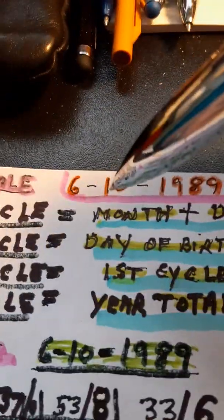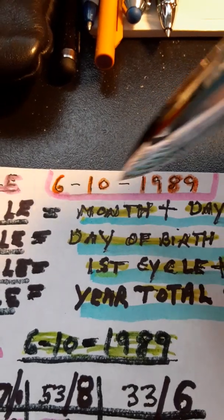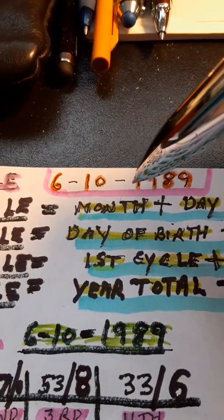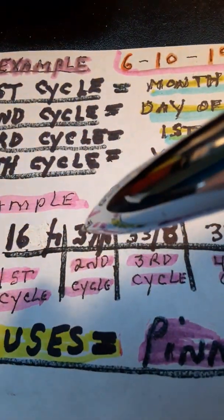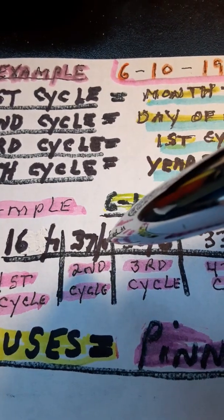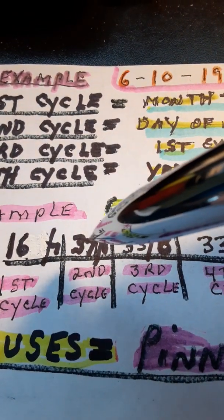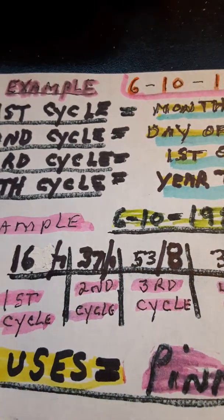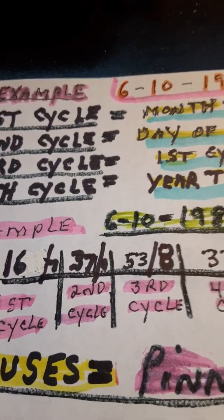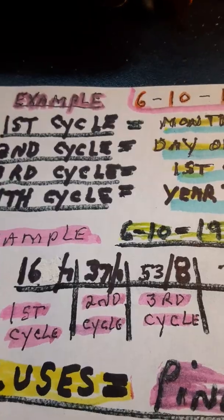The second cycle is the day of the month somebody's born and the year. So we go 1 and 9 is 10, 18, 27, 37, and we put that in the second cycle. 37 is a 1. If we went 3 and 7 is 10, 1 and 0 is 1. We're reducing the numbers by addition because they're pinnacles, they're the pluses.